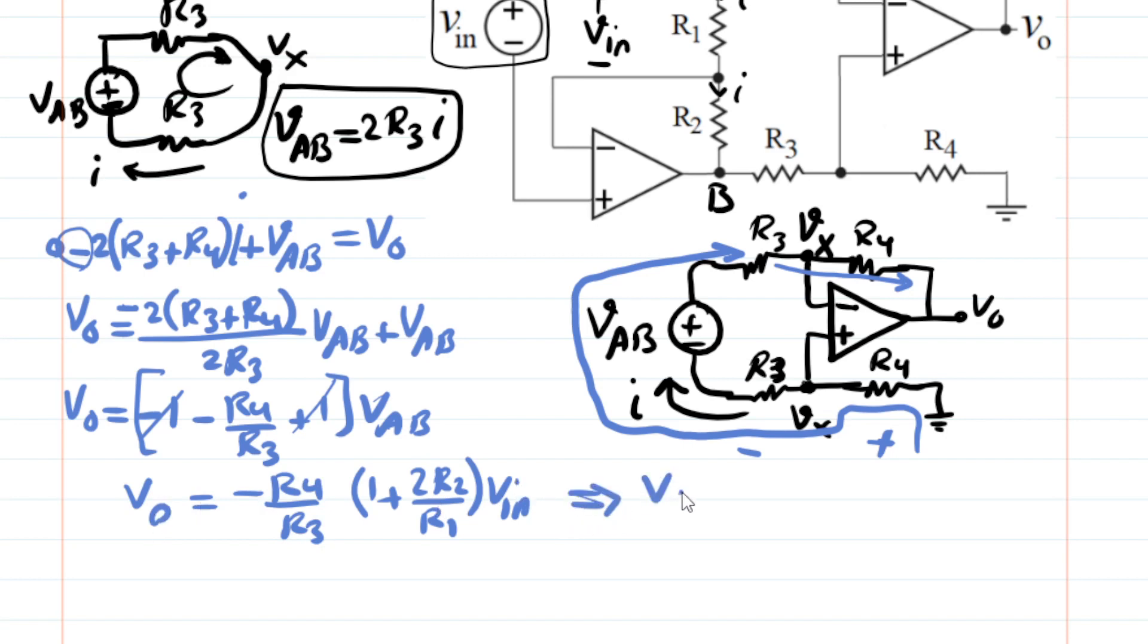So overall gain, V out over Vin for this instrumentation amplifier is just simply negative R4 divided by R3 times 1 plus 2 times R2 divided by R1. This is what we were looking for.